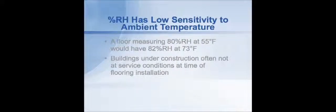As an example on this next slide, I can show you some numbers based on some of this preliminary work. For example, if you go out to a building at 55 degrees because the heat's not on yet and you measure 80% relative humidity in the floor, it turns out that when that floor gets up to 73 degrees at service conditions, the humidity in the floor will only go up two points, up to 82%. So potentially we'll be able to make these measurements before we're at service conditions, which is going to be much more useful than other test methods.